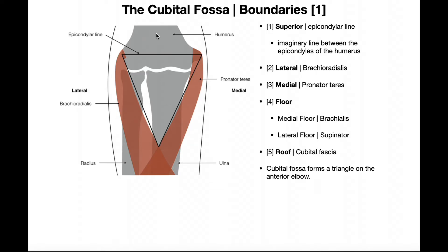Right here we see the humerus proximally, the elbow joint, and the humerus articulating with the ulna medially, with the radius in gray laterally. The cubital fossa is formed in a triangular fashion by three major boundaries. We have a superior boundary, a lateral boundary, and a medial boundary. The superior or proximal boundary is the epicondylar line — an imaginary line drawn between the two epicondyles of the humerus: the larger medial epicondyle and the smaller lateral epicondyle.